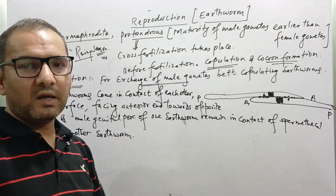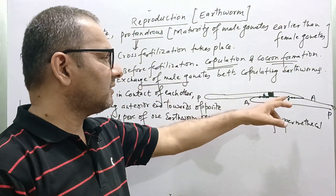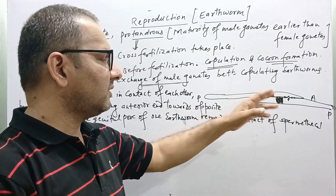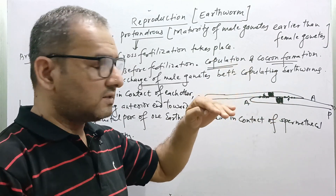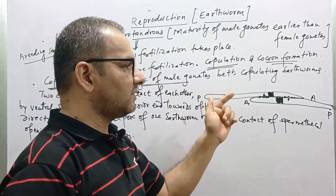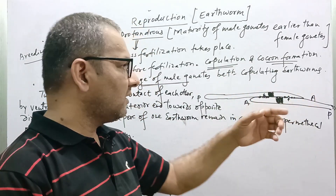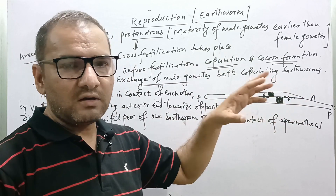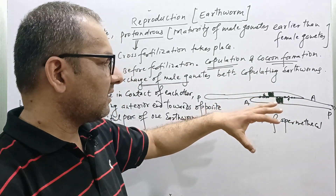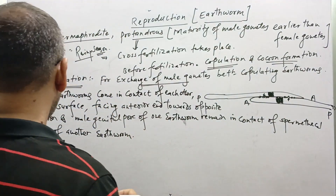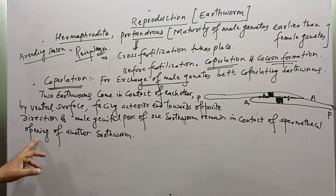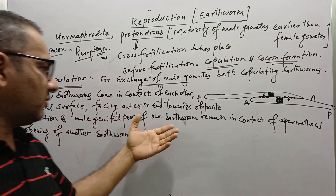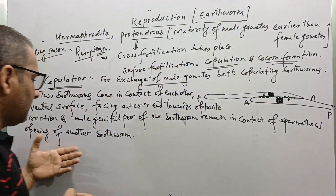Exchange of sperm takes place between the copulating earthworms. The male genital pores are a pair, ventrally on the 18th segment, while there are four pairs of spermathecal openings — each pair on the ventrolateral position of intersegmental grooves lying between segments 5-6, 6-7, 7-8, and 8-9. They slightly change their position so that the male genital papilla can be inserted into all spermathecal pores and all spermatheca can receive the sperm. The two earthworms remain in contact by their ventral surface with anterior ends towards opposite directions.